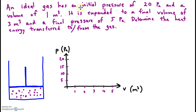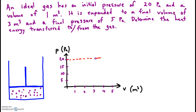We've got an ideal gas with initial pressure of 20 and initial volume of 1. Let's make a dot on the graph to represent the initial state. The pressure, that's the y value, is 20, so somewhere along here, and the volume is only at 1, pretty small.